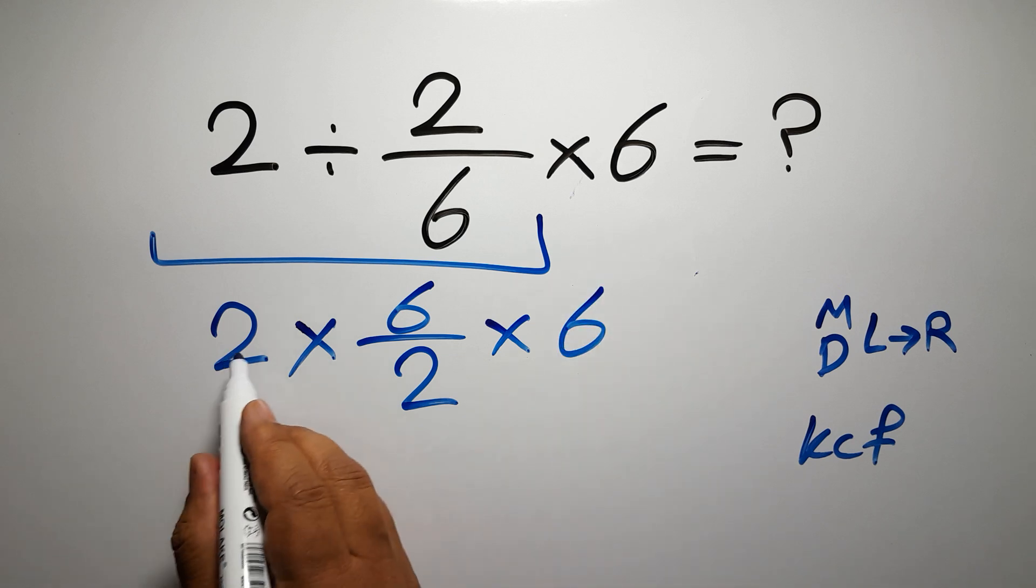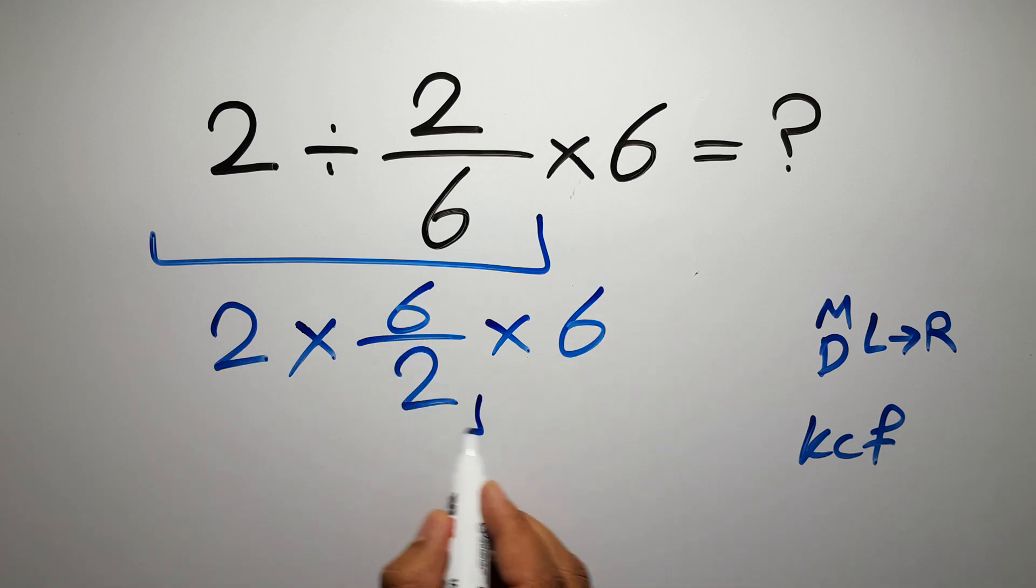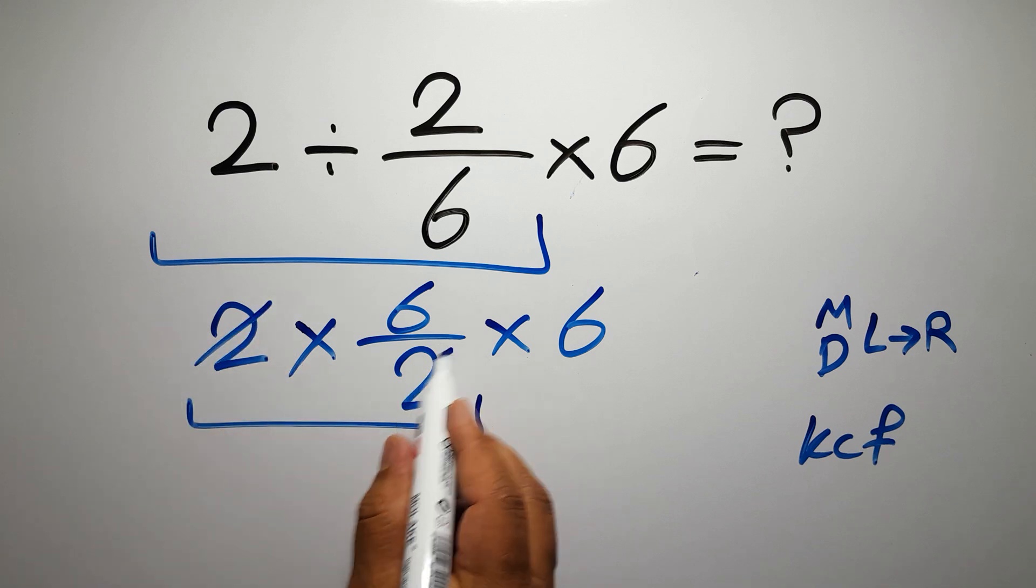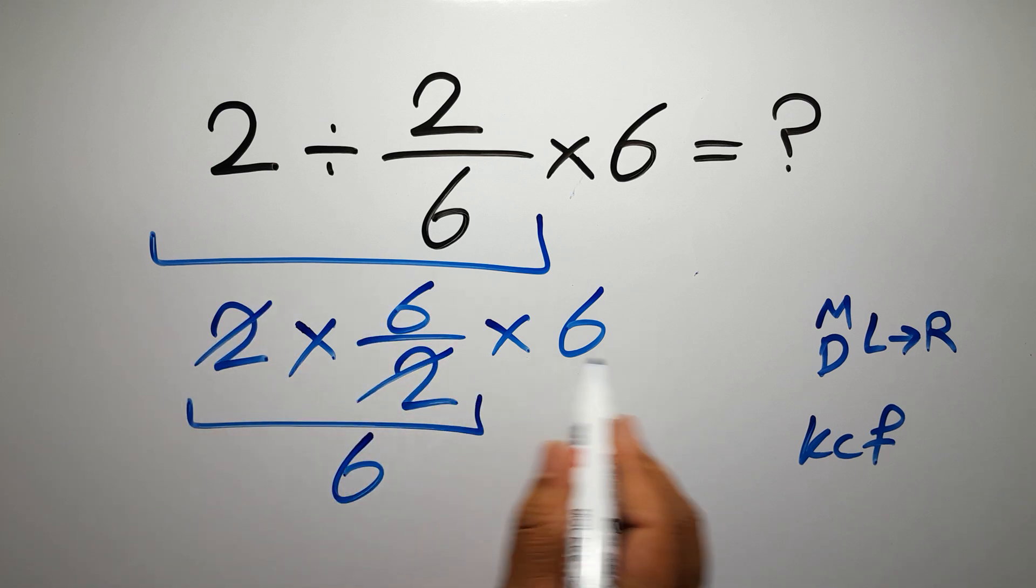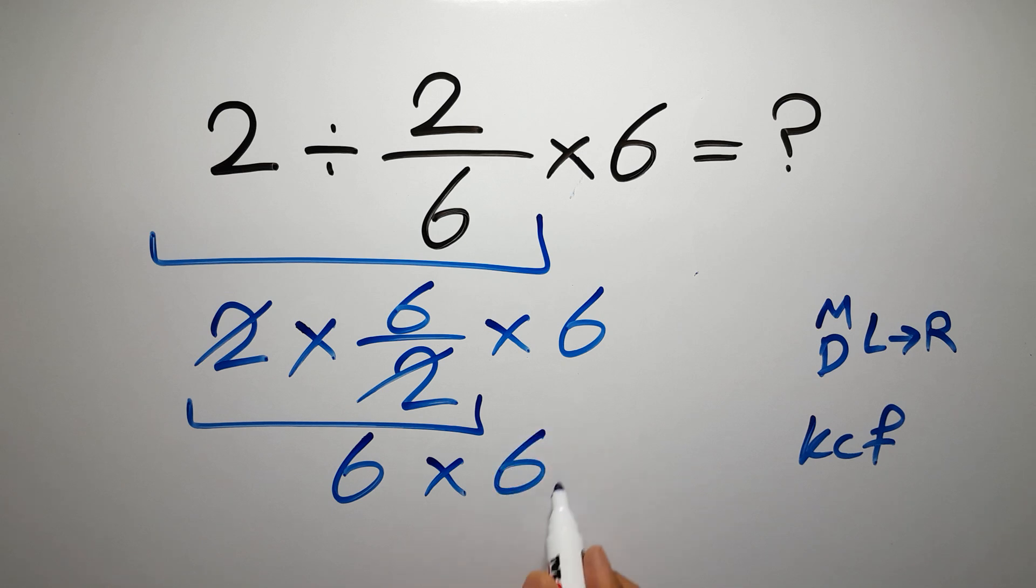Now, 2 times 6 over 2. These 2 and these 2 can cancel each other out. So we have just 6 times 6, which equals 36.